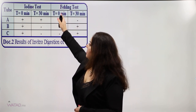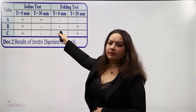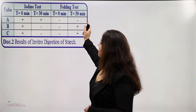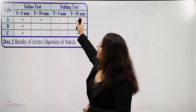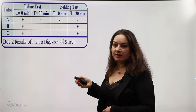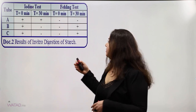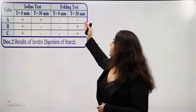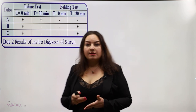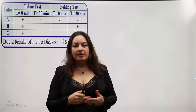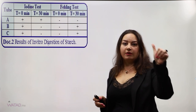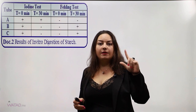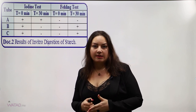Using the Fehling test, which is specific for reducing sugars: at time 0 minutes the test is negative, indicating the absence of reducing sugar. After 30 minutes, tube A still shows a negative result, indicating no transformation from starch into reducing sugars. However, tubes B and C show a positive result, meaning starch was digested or transformed into reducing sugars under the action of salivary amylase present in saliva, pancreatic juices, and intestinal juices.